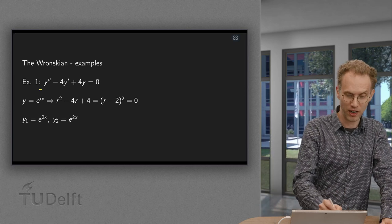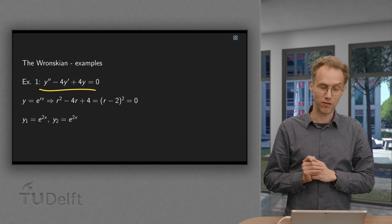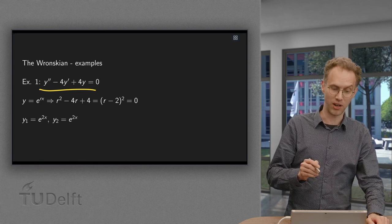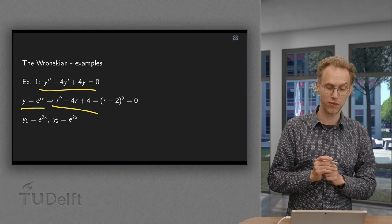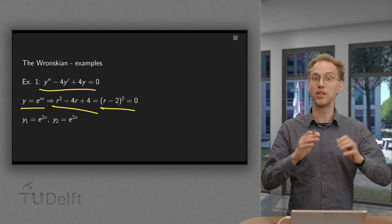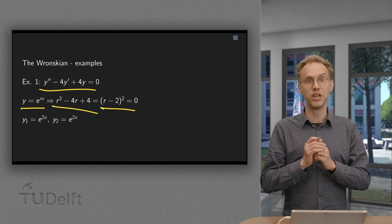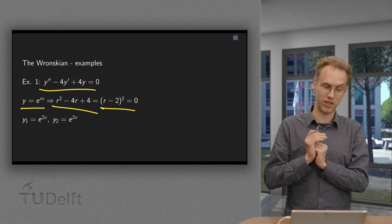For example, this one over here: y'' - 4y' + 4y = 0. The familiar substitution e^(rx) gives us r² - 4r + 4 = 0, or (r - 2)² = 0. So we basically have a double zero in this case.